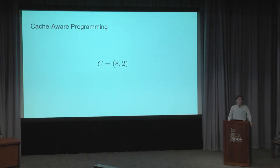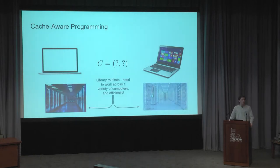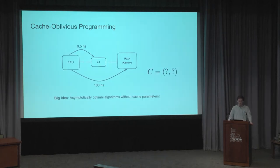Cache-aware programming is quite useful, but there's one problem with it: generalization. A MacBook, an old Windows computer, or server farms at Google may have computers across a variety of different specifications. Having library routines for common operations like transpose and multiplication work efficiently across a variety of computers is important, and this is the motivation for cache-oblivious programming — algorithms that are asymptotically optimal with respect to the number of cache misses without needing to know the cache parameters at all.